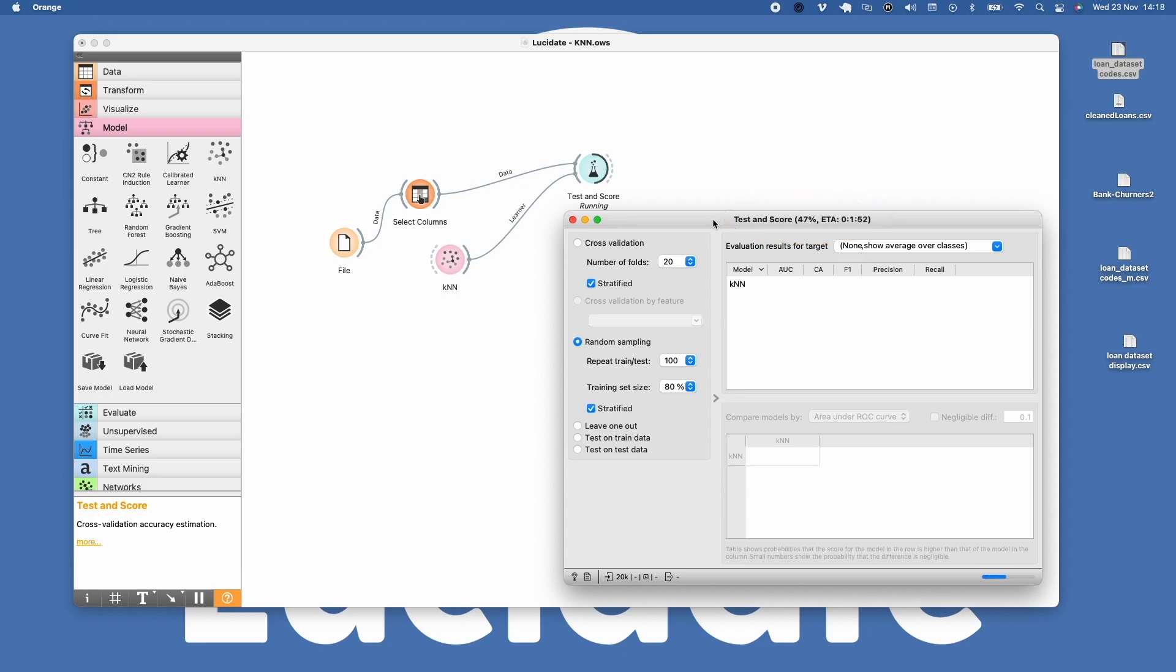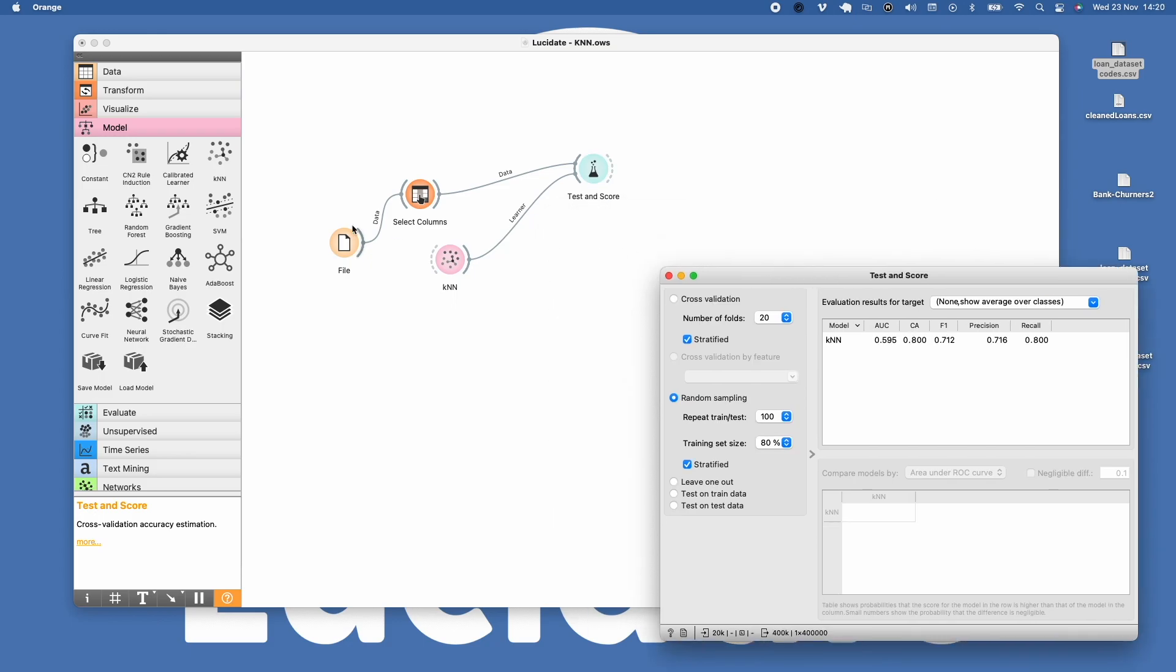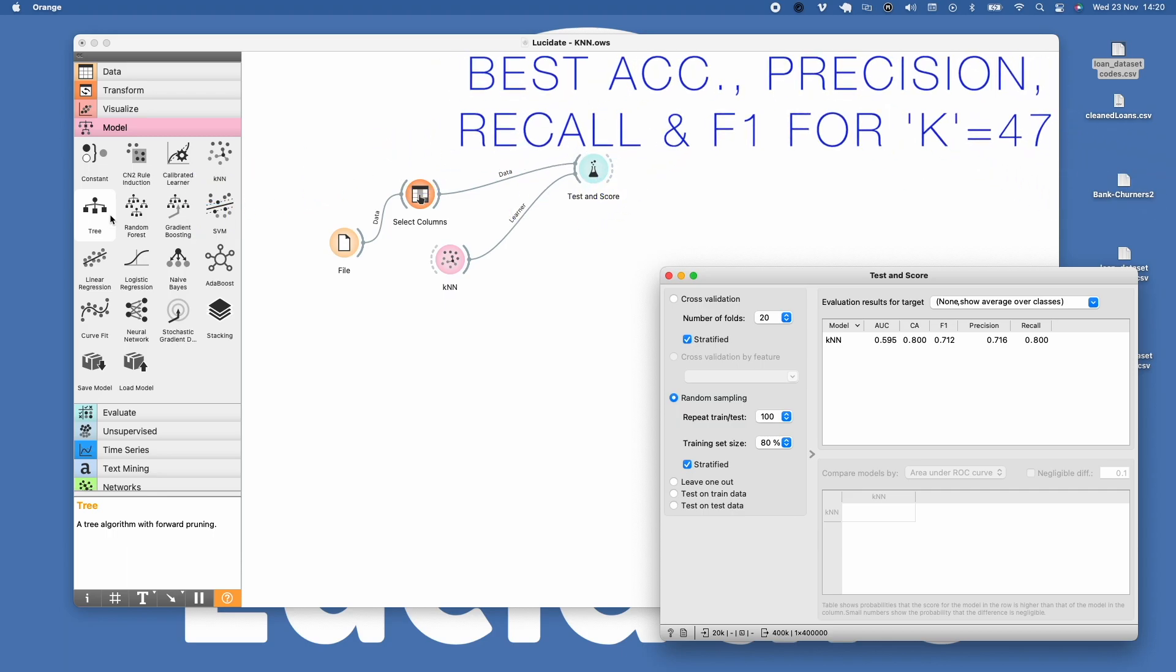The result you are seeing is for a K of 47. I tested K for a range of values from 3 up to 99. There was not much variation in performance. Accuracy scores ranged from 79.5% for a K value of 7 up to 80% with a K of 99. The best overall scores—F1, precision, accuracy and recall—were achieved with a K of 47.